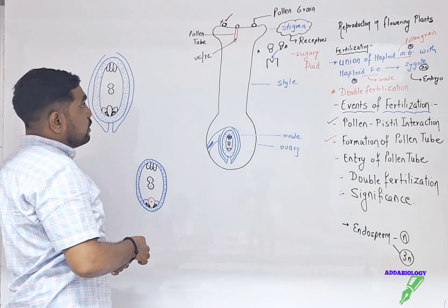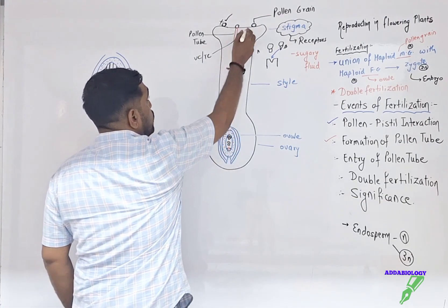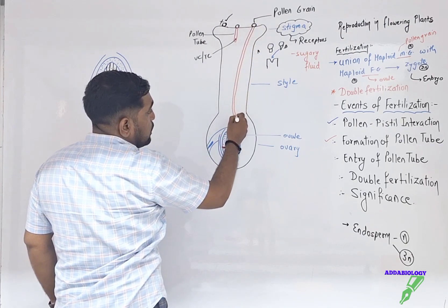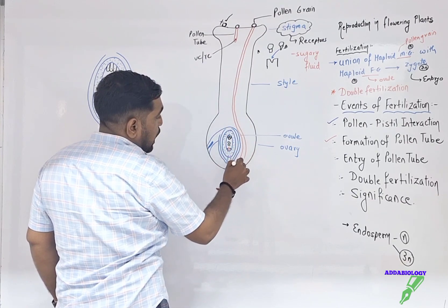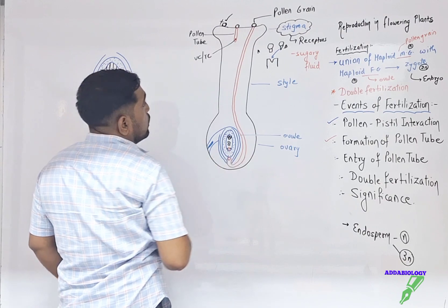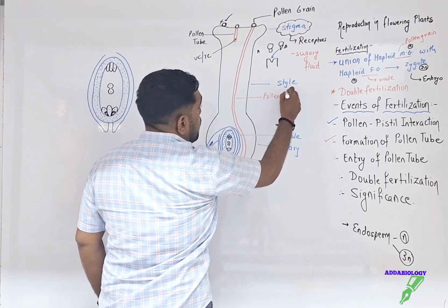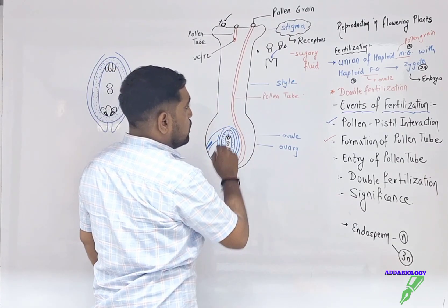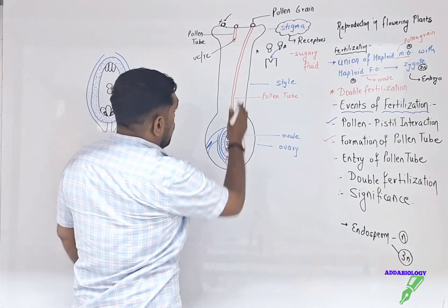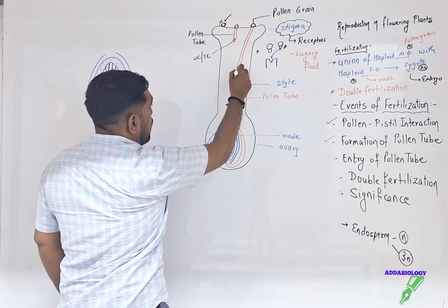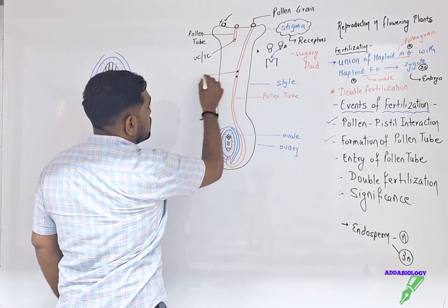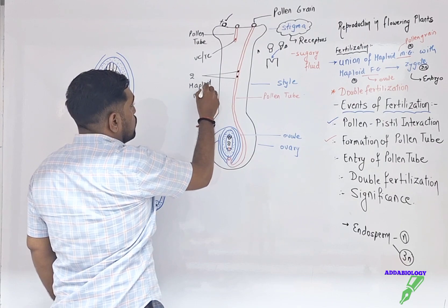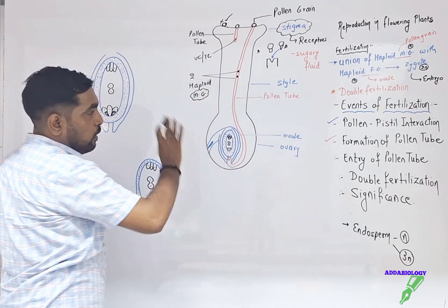The length of the pollen tube totally depends on the length of the style. Under chemical attraction, the pollen tube starts moving towards the ovule — it keeps growing and its length matches the length of the style. Once it passes through the style, the generative cell undergoes a second mitosis and forms two haploid male gametes, which will move ahead for double fertilization.